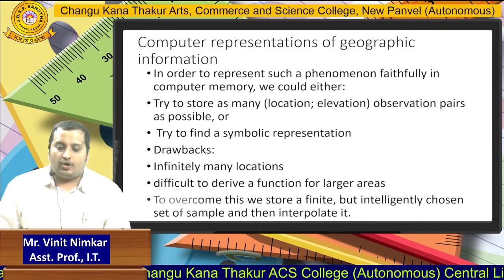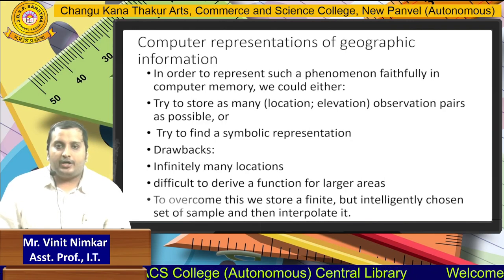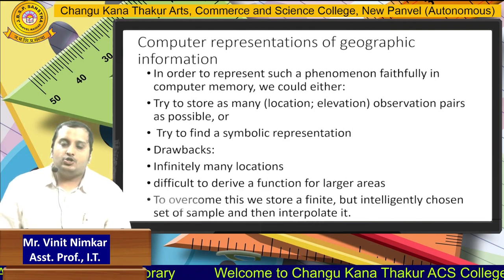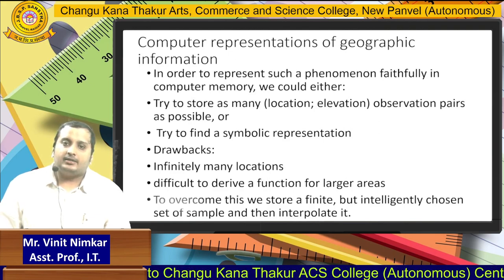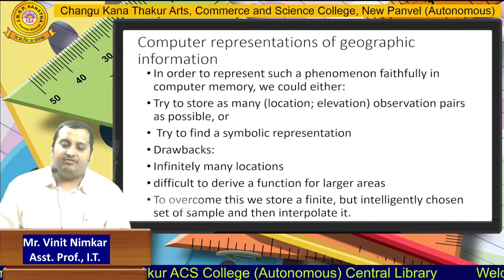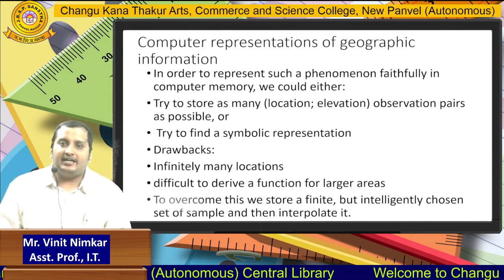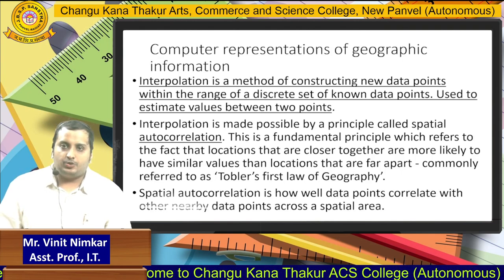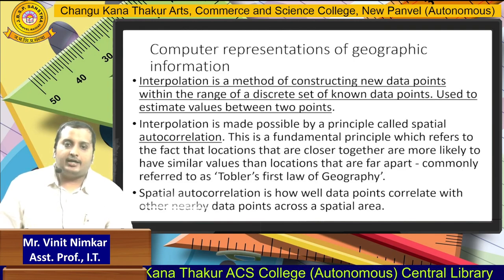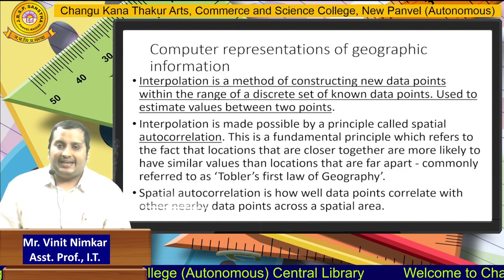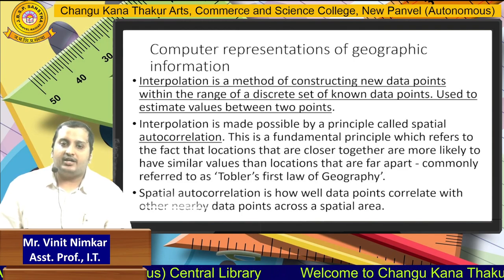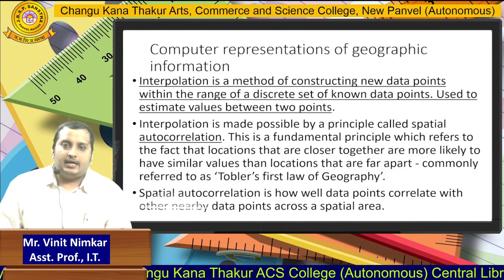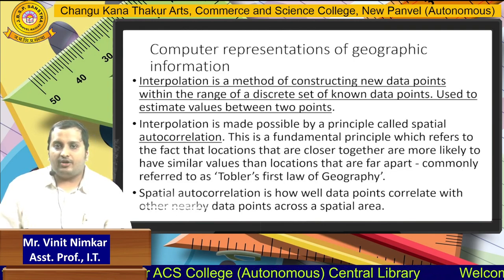Computer representations of geographic information: it is very important to represent geographic phenomena in maps properly, with exact locations, elevations, etc., symbolically represented. A drawback is that if there are many locations and many geographic phenomena, it is very difficult to capture and represent them in computers. Interpolation is one famous method used for this. If we know certain points or values of geographic phenomena, we can find out other unknown data points or values. This principle is called autocorrelation — finding unknown values of geographic objects with the help of known values.